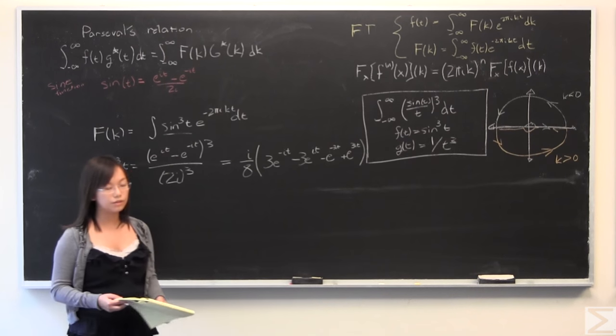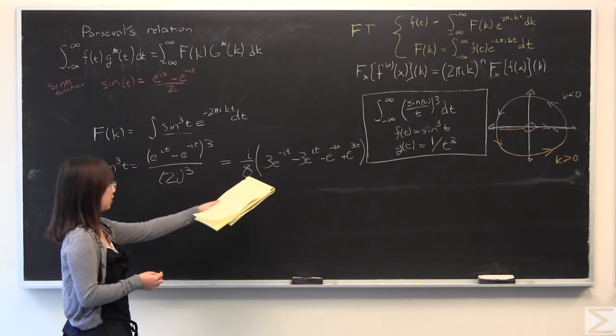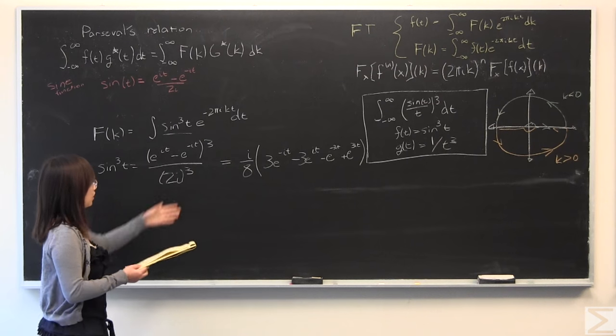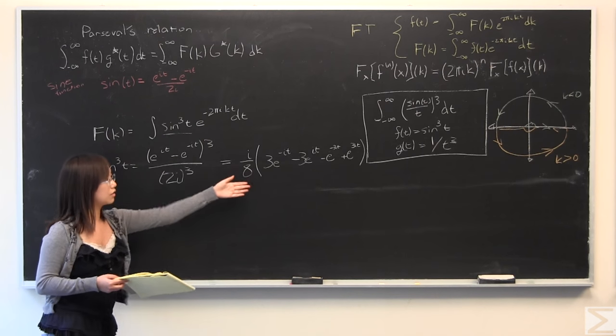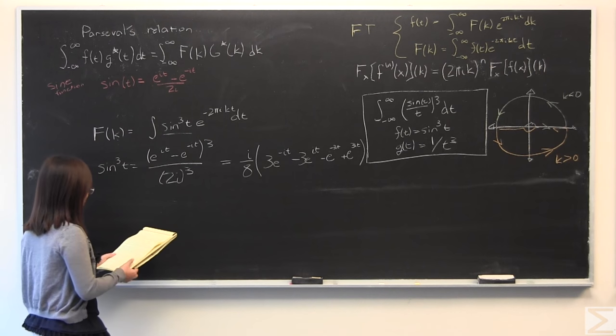So I'm going to plug that back into this equation over here. Instead of sine cubed of t, I'm going to write that. And I'm also going to distribute this, so the exponents will be multiplied together, term by term.